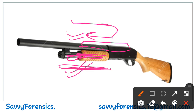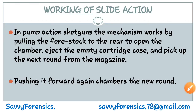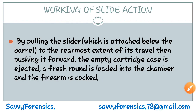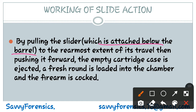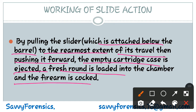This is a slide action firearm. By pulling the slider — which is attached below the barrel — to the rearmost extent of its travel, and then pushing it forward, the empty cartridge case is ejected, a fresh round is loaded into the chamber, and the firearm is cocked. This entire process happens simultaneously.